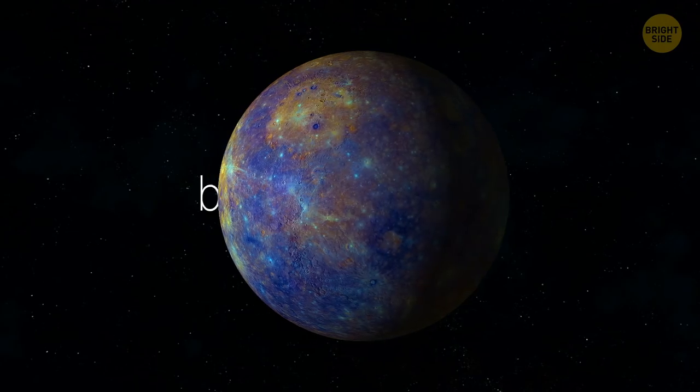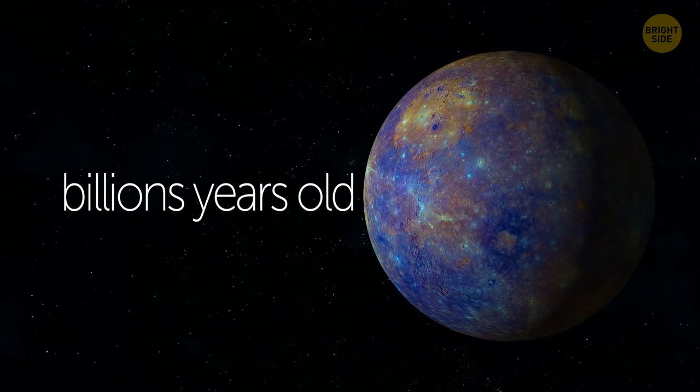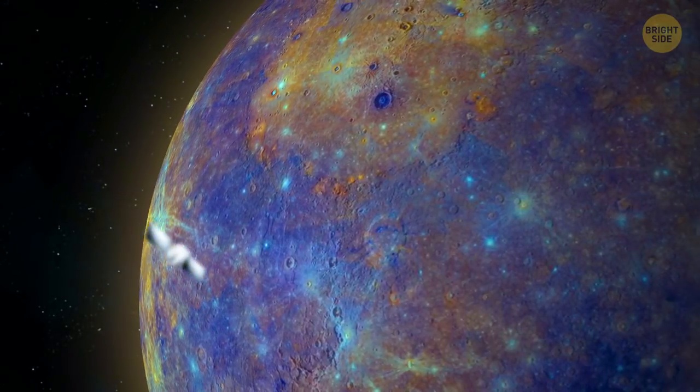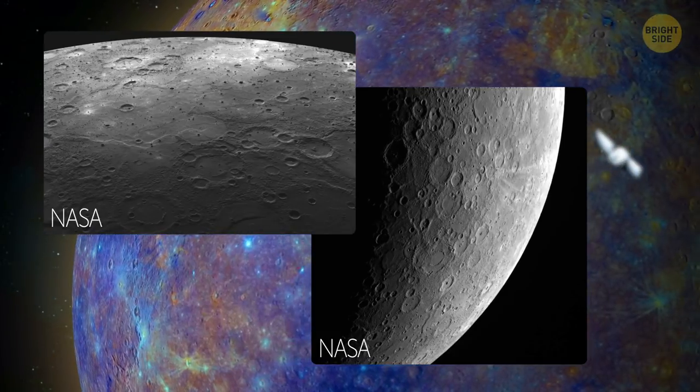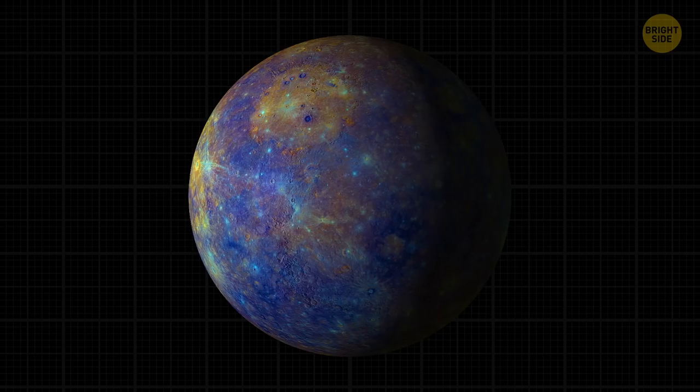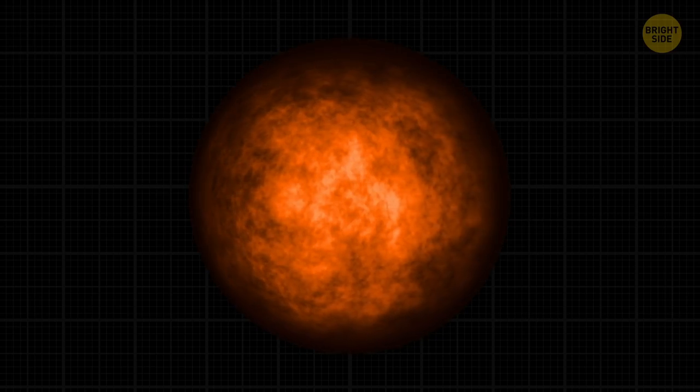Mercury is a few billion years old. In 2016, scientists discovered some abnormalities on the planet's surface, showing that it's getting smaller. After more research, they found out that Mercury hasn't finished cooling down yet.